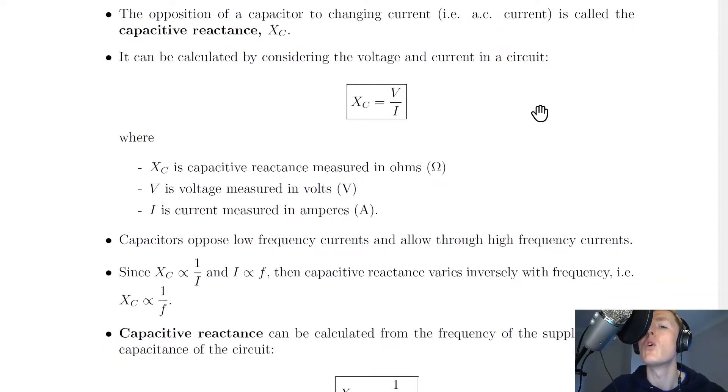So just like rearranging Ohm's law V equals IR for resistance, where we get R equals V over I, we've got an equation now for capacitive reactance, which is XC equals V over I. So it's almost like we're replacing the resistance symbol in the Ohm's law equation with the capacitive reactance symbol XC. So we have XC equals V over I.